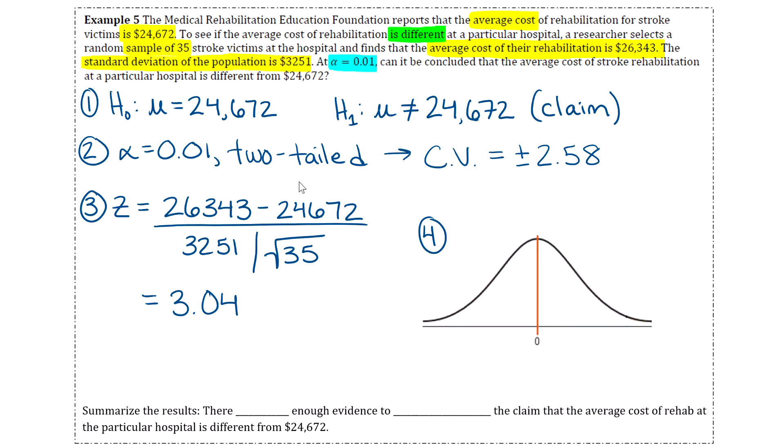Okay, then step four, we'll just put our critical values on our normal distribution curve. So we have -2.58 and positive 2.58. And this is a two-tailed test, so we have two rejection regions. We have one going off to the right and one going off to the left. Okay, and then we're just going to compare where our test value falls. So 3.04, let's see, I guess I didn't label it. 3.04 will definitely be bigger than 2.58, so that is going to fall in that rejection region off to the right there. So 3.04 is in the rejection region, and since it is in the rejection region, that means our decision is going to be that we reject the null hypothesis.